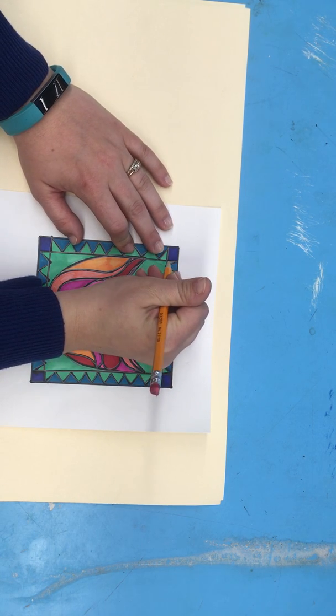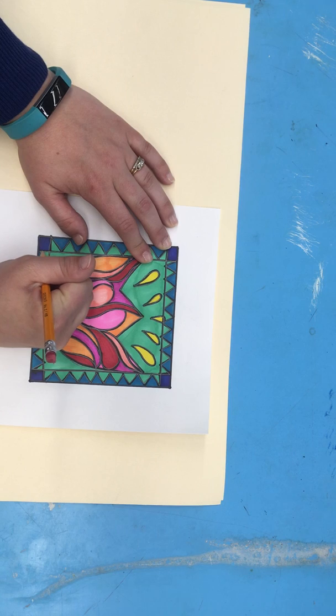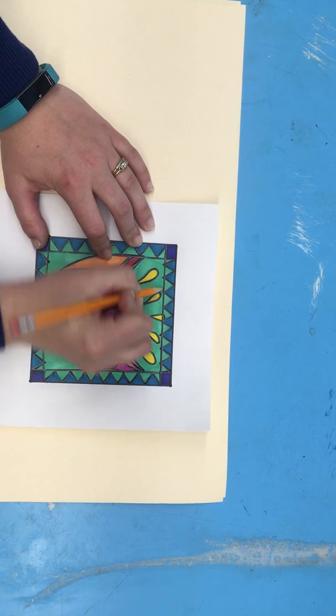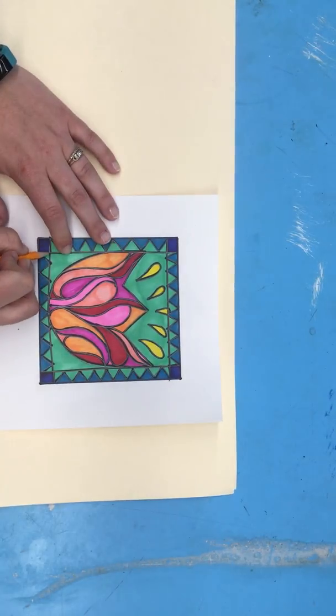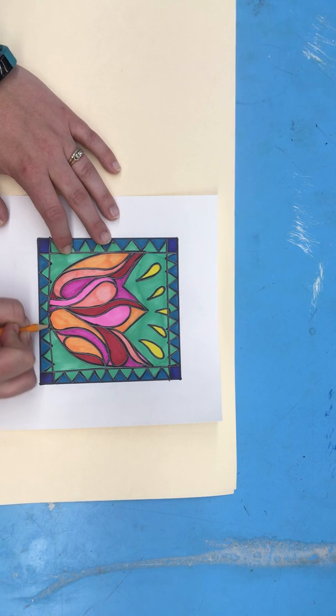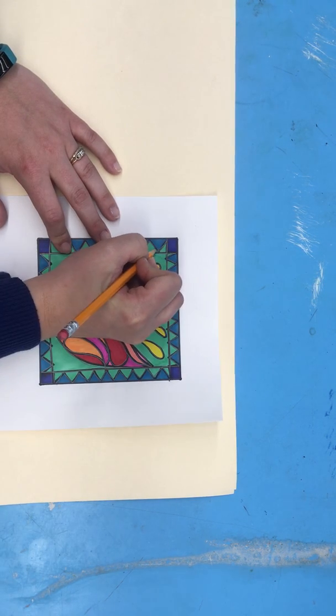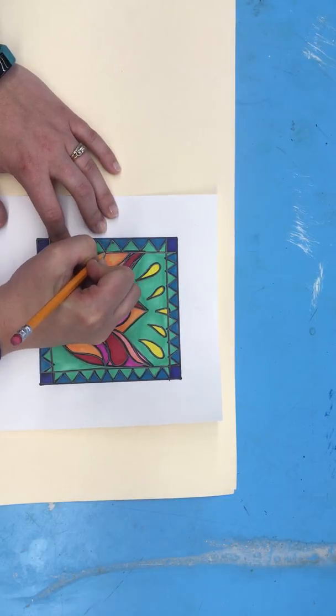What you're going to do is you're going to trace over all of your black sharpie lines with a pencil. You want to press down firmly, but you don't want to press so hard that you tear through the paper or break the pencil. That's too hard. So you just want to press down like you're trying to draw a very dark line.